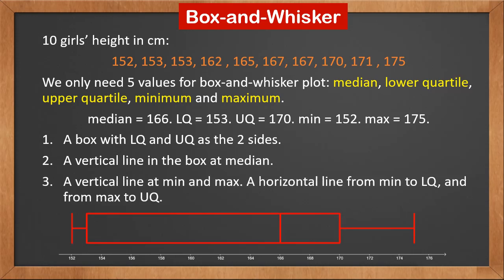Then we draw a vertical line at both the minimum and maximum points. Lastly, we draw a horizontal line from the minimum to the lower quartile, the side of the box, and from the maximum to the upper quartile, the other side of the box. This completes the box and whisker plot.